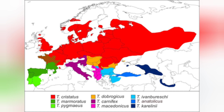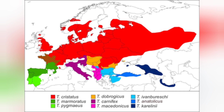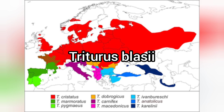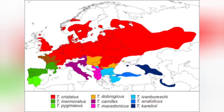Looking at France, you can see that Triturus cristatus is sympatric with Triturus marmoratus — that means the two species are occurring alongside each other. The hybrid form is known as Triturus blasii. There's a double 'i' so to me 'Blasii' should be the correct pronunciation. Triturus blasii doesn't occur on this distribution map because it is not classed as a valid taxon — it is purely a hybrid between two different species.